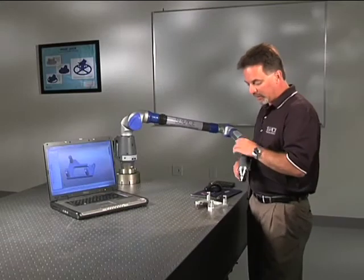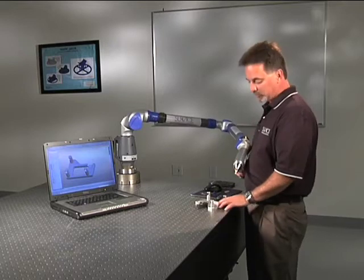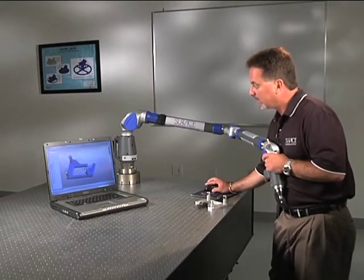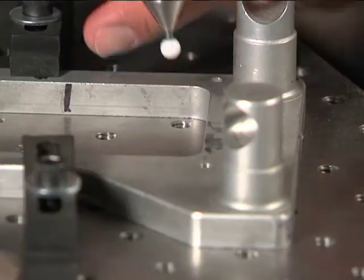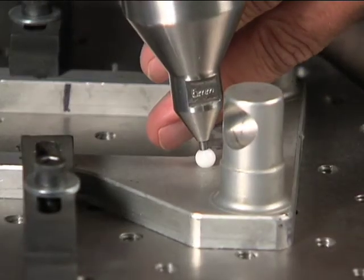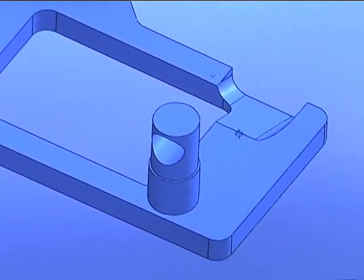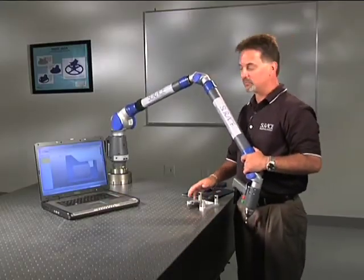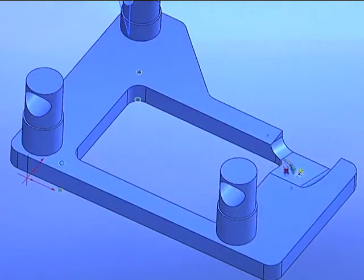The only thing we need to do now is there's five 6-32 tapped holes on this part. So we're basically going to do that by documenting the center of these holes first. Okay, now after documenting the center of these tapped holes, I'm going to tell my software to apply a 6-32 tap to each of my center locations.